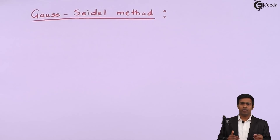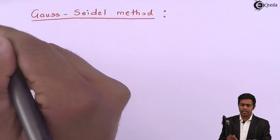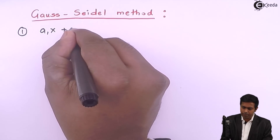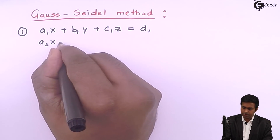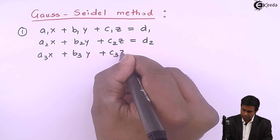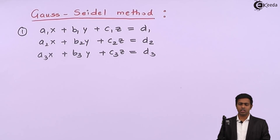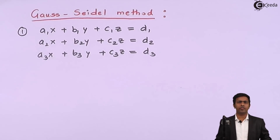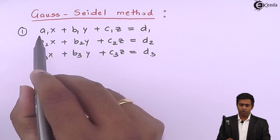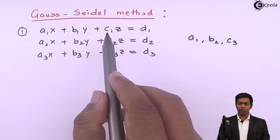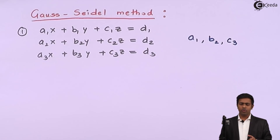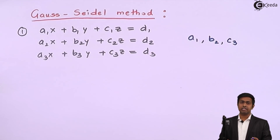To understand the modifications, we consider some simultaneous equations: a1x + b1y + c1z = d1, and so on for three equations with three unknowns. If you observe, the coefficients a1, b2, and c3 will be large compared to the other coefficients of x, y, and z. To solve by Gauss-Seidel, we first represent these three equations so that the large coefficients go into the denominator.